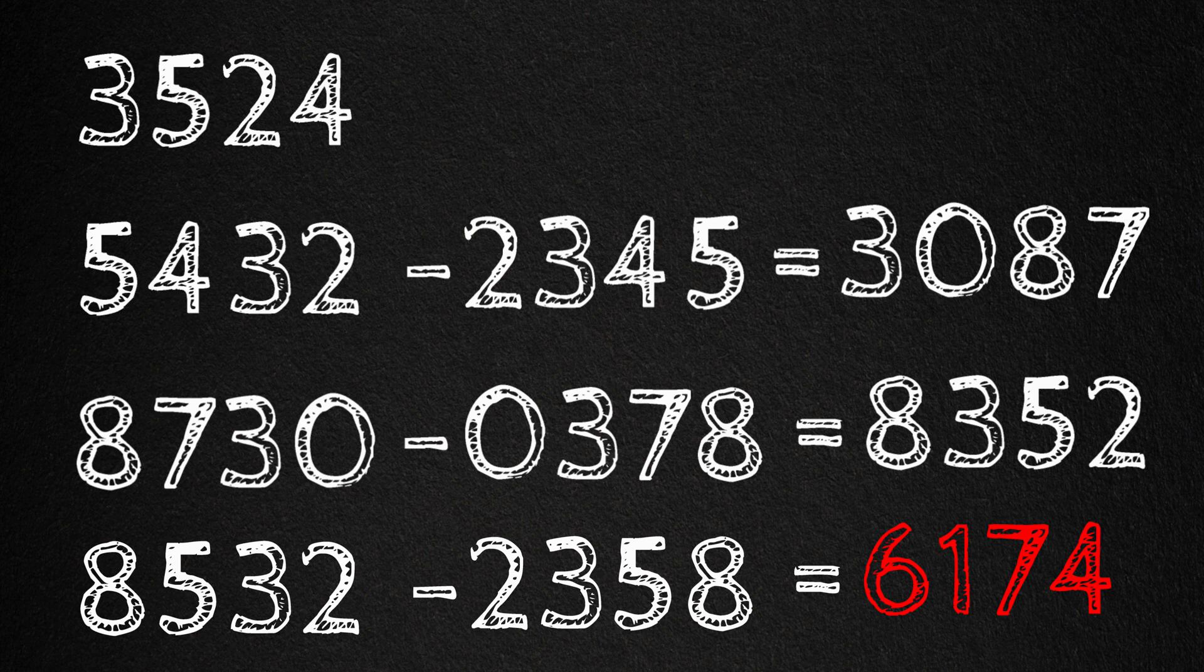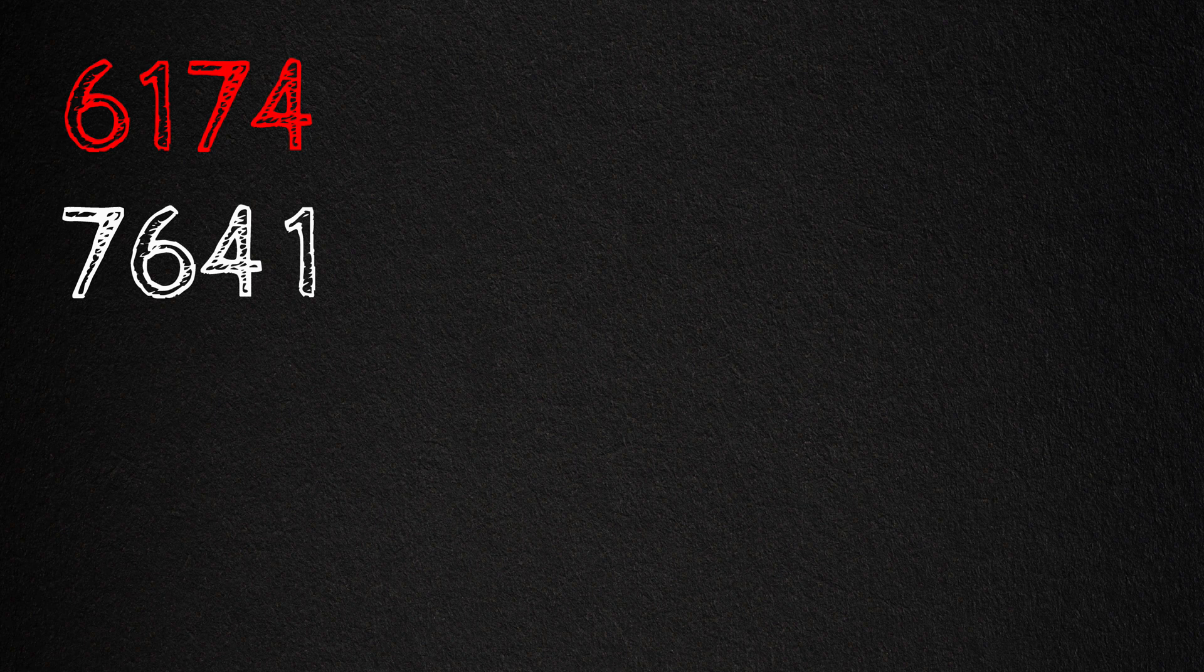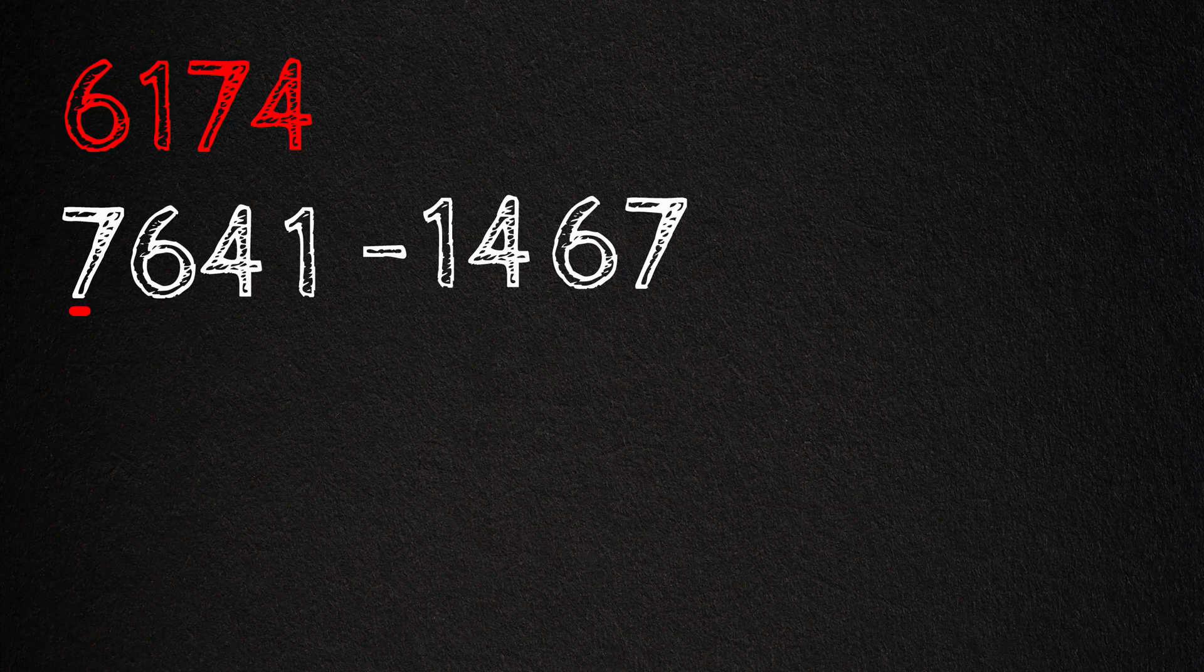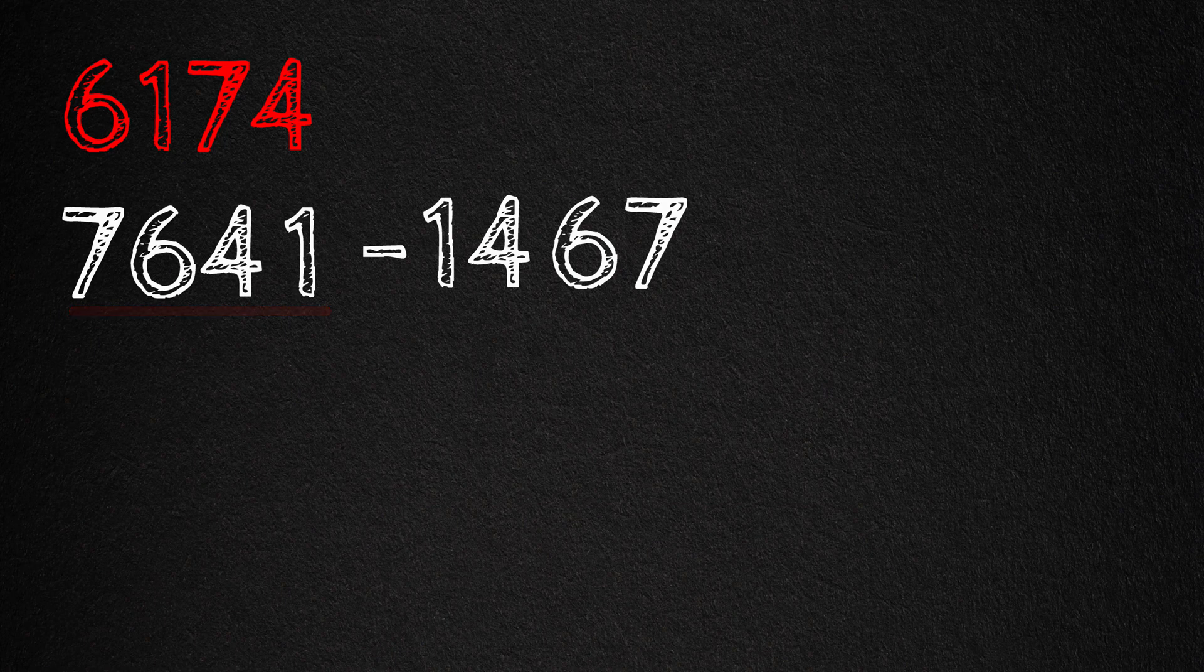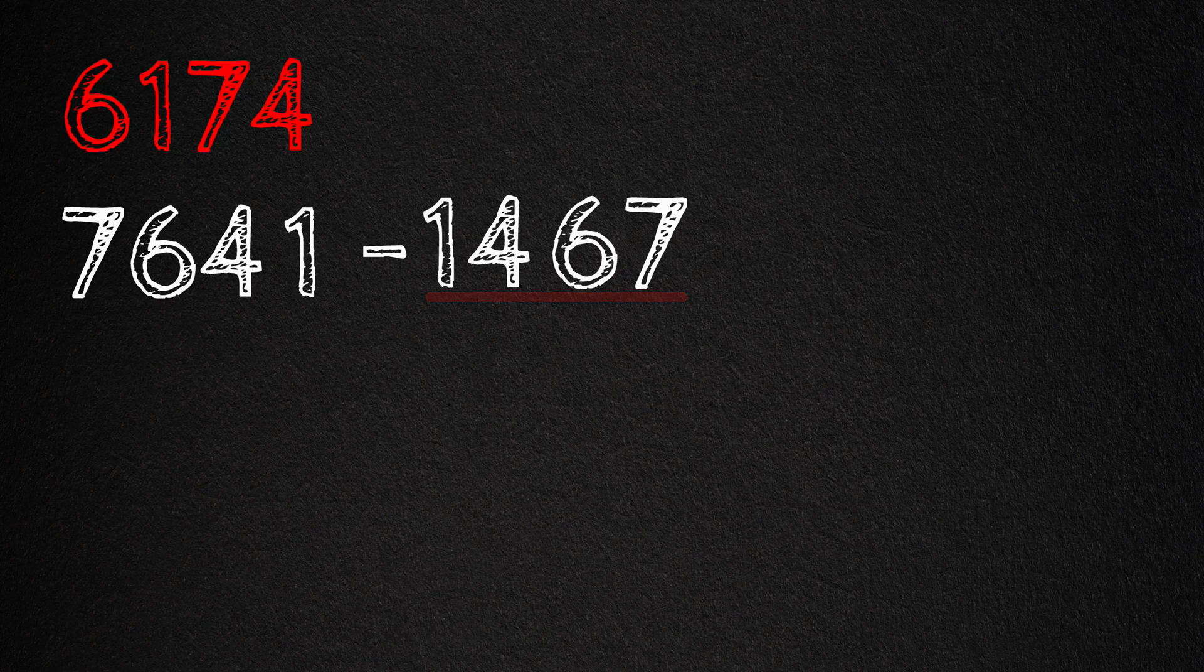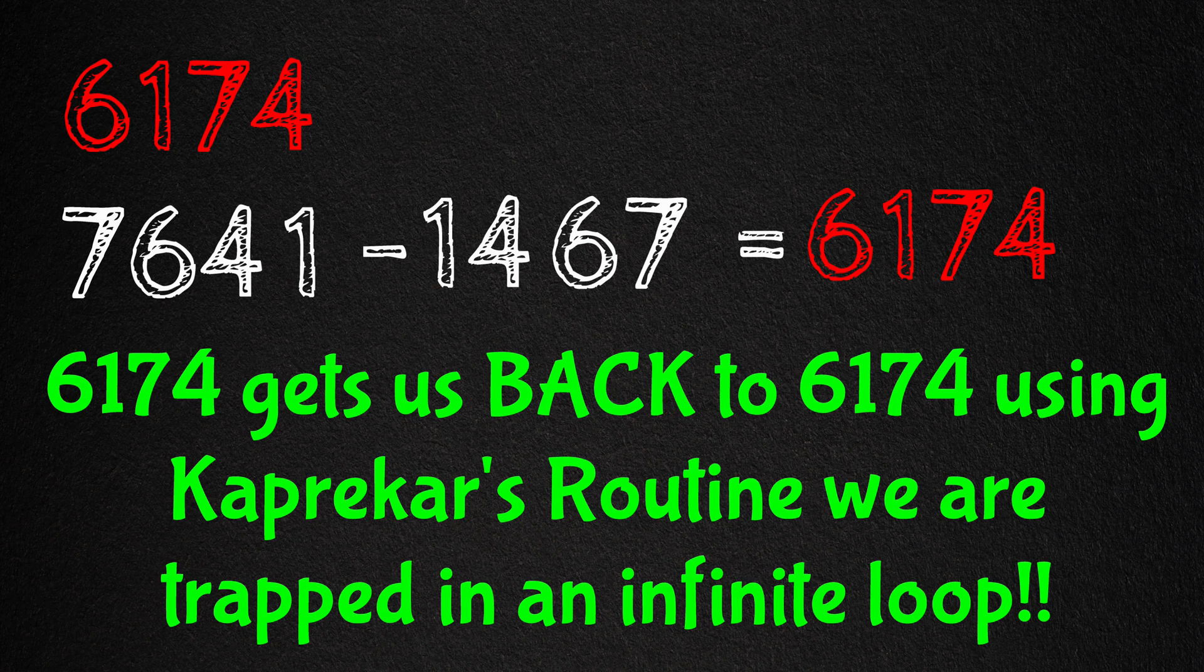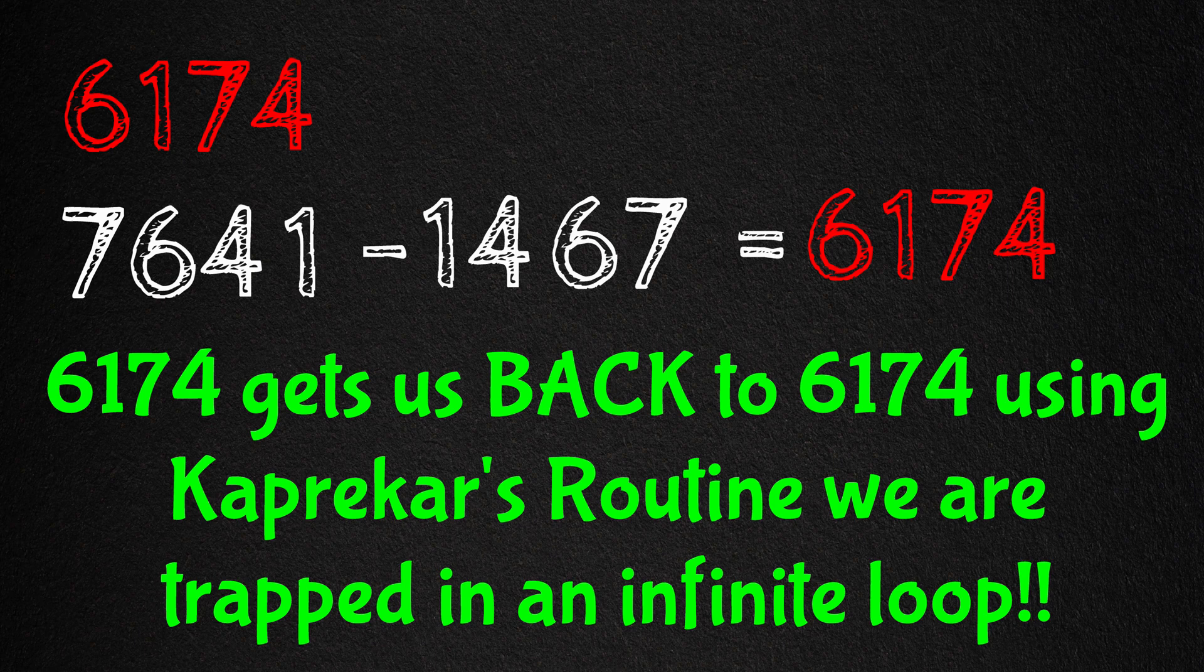Watch what happens when we rearrange 6174 and apply Kaprekar's routine. 6174 becomes 7641 minus 1467. Remember, we're rearranging the digits in descending order for the largest possible number. And then in ascending order for the smallest possible number. So 7641 minus 1467, and we get back to the same number, 6174. So we're trapped again.